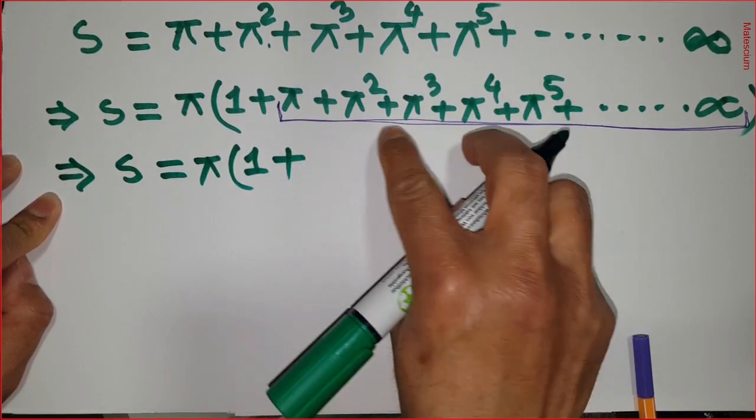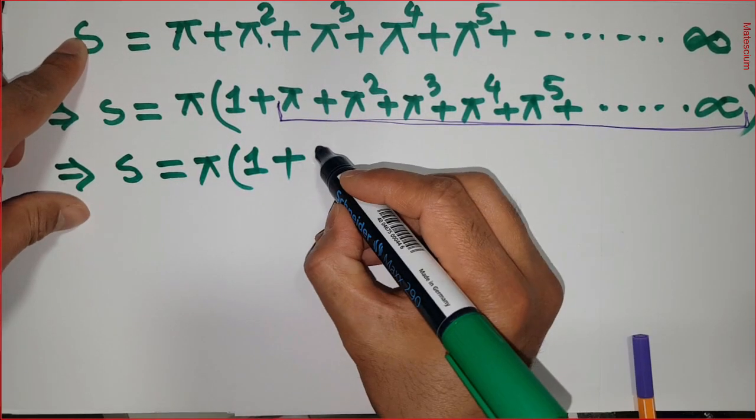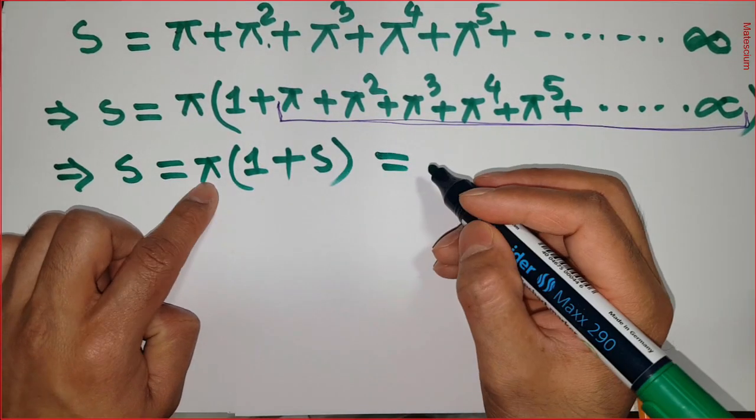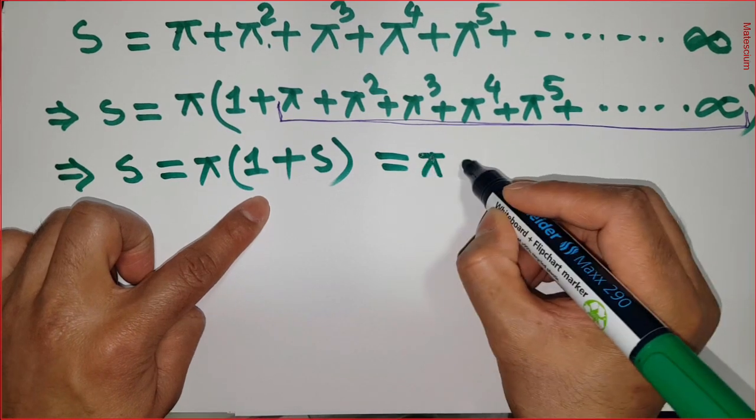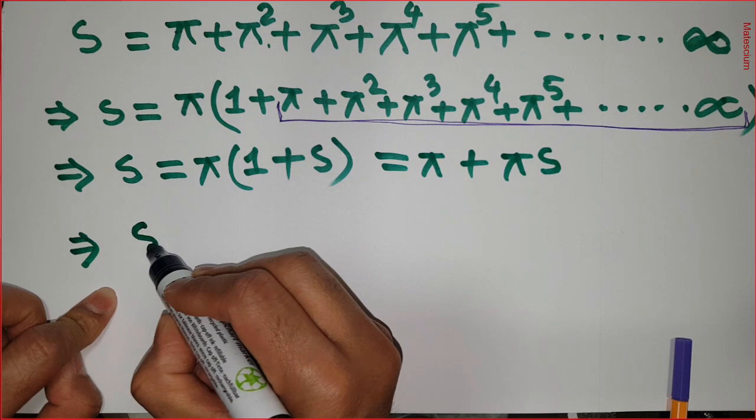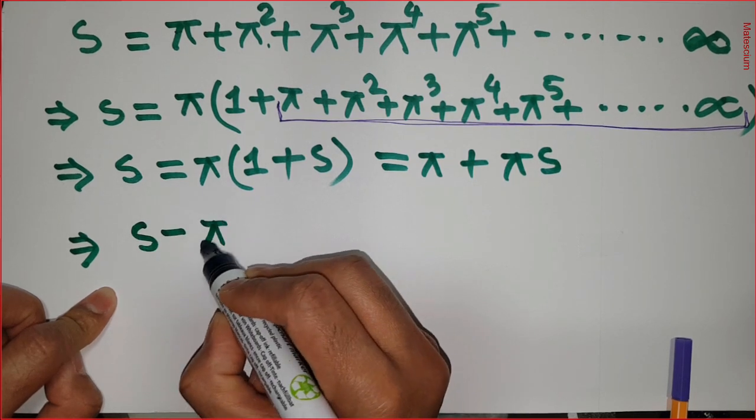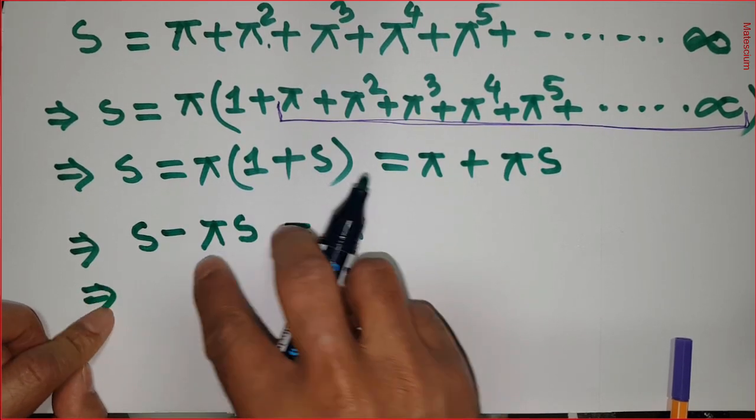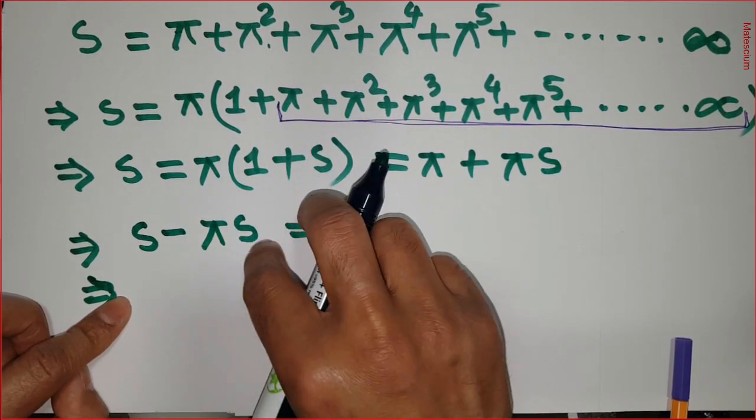In the next line I can write like this: S equals π times (1 plus this is exactly S), right? Then π is multiplied by 1, π times 1 is π, πS.